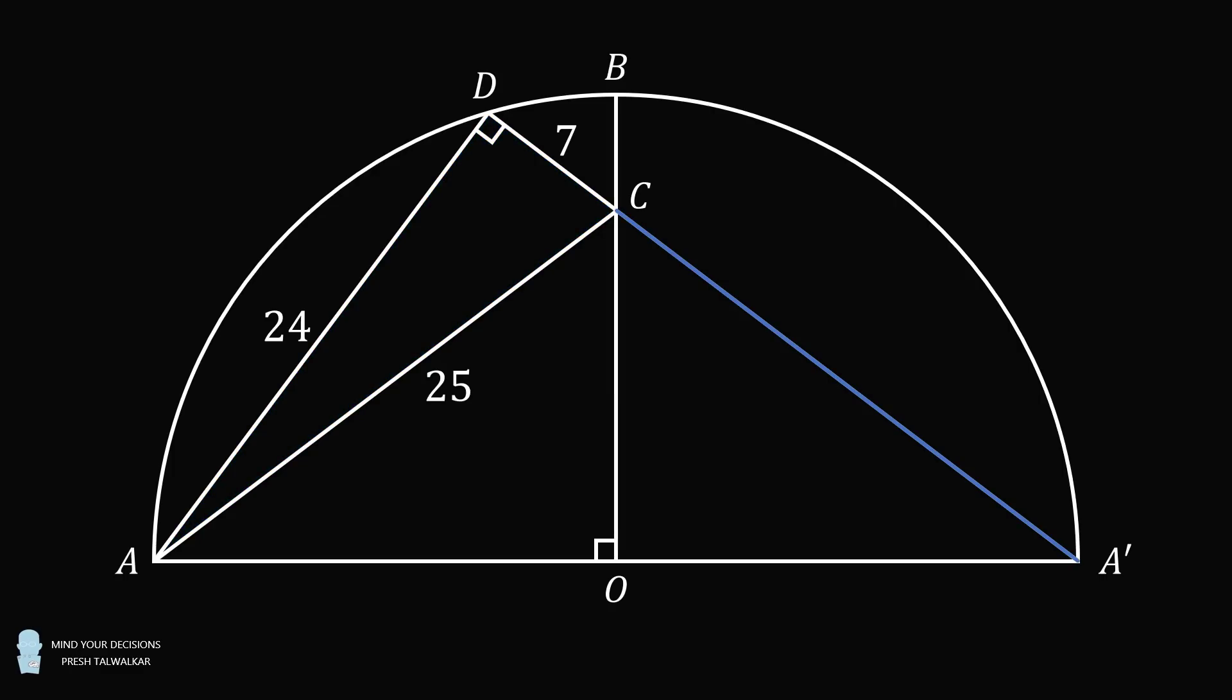Now, what is the length of A'C? It's a reflected image of AC. So it will be congruent to AC. Therefore, A'C will also be equal to 25.